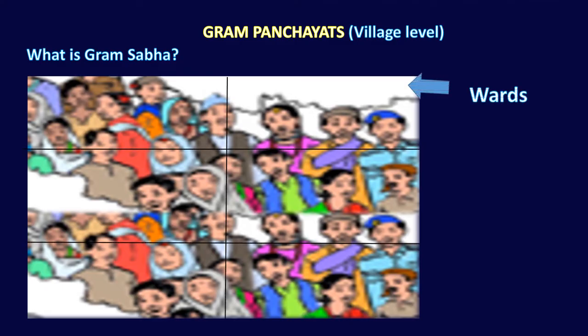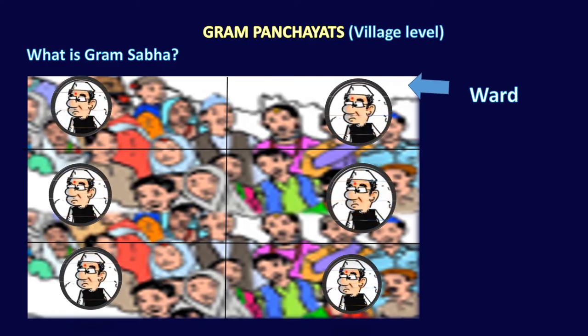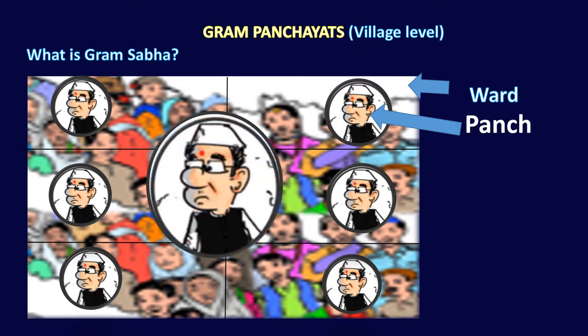Now for election purposes, each village is divided into many smaller units or areas called wards. A ward is a small unit of a village, and all the people of each ward elect a ward member known as Panch or ward member.